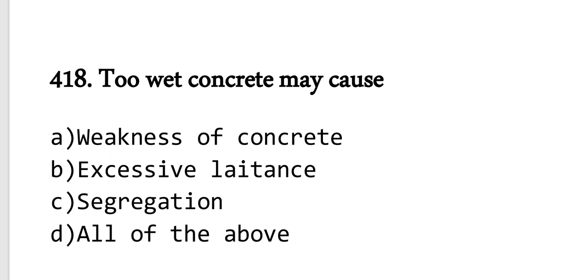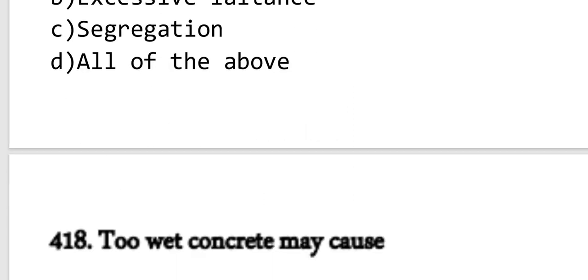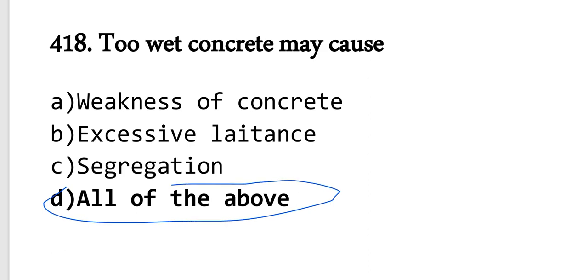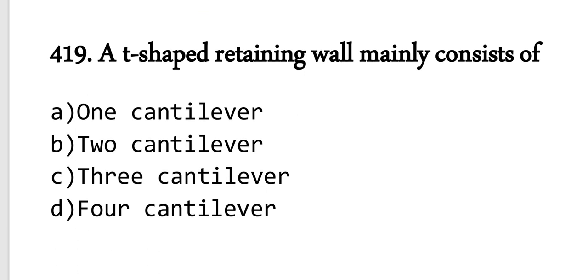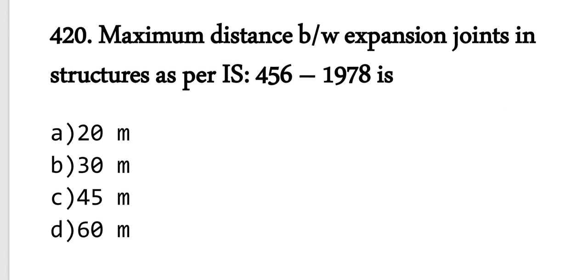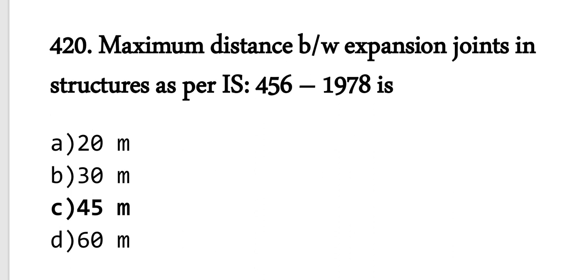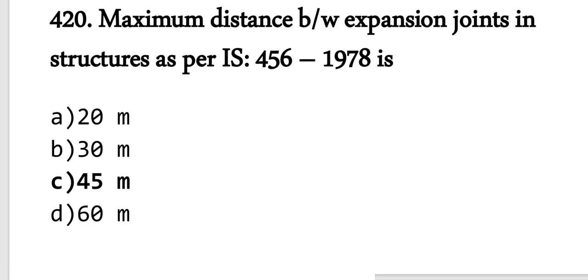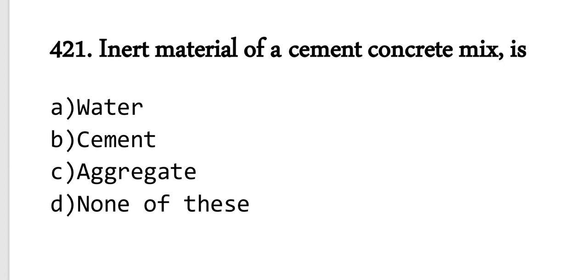Question 418: Excessive water in concrete creates problems like weakness, bleeding, and segregation. All of these are correct. Question 419: This is a cantilever retaining wall. Option C is correct. Question 420: Maximum distance between expansion joints in a structure is 45 meters. As per IS code, expansion joints should be provided in concrete or rigid pavement, and the maximum distance is 45 meters.